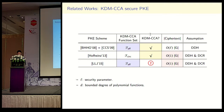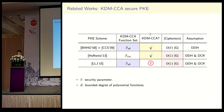For KDM-CCA secure PKE, there are few efficient constructions. Hofheinz presented the first efficient KDM-CCA secure PKE with compact ciphertexts; however, the function set only consists of selection functions. Recently in 2015, LLJ proposed the first KDM-CCA secure PKE for affine functions. However, the security proof of their scheme is flawed, which we will explain later.